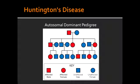What is the trinucleotide repeat of Huntington's Disease? There is expansion of the CAG repeats, which is called anticipation.